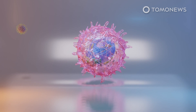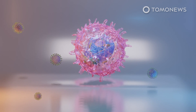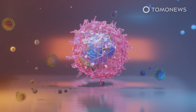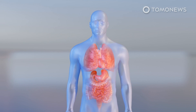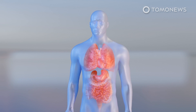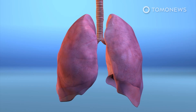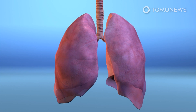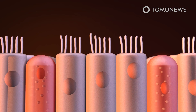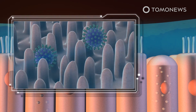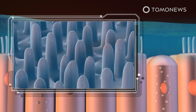Researchers from China have used cryoelectron microscopy to show how SARS-CoV-2 infects humans. The study published in Science says the virus targets a type of receptor found on human cells in the lungs, heart, kidneys, and intestines. Citing Kingston University microbiologist Mark Fielder, Sky News reports that the virus seems to attack two types of lung cells: goblet cells that coat the respiratory tract with mucus, and ciliated cells that usually filter out pathogens.